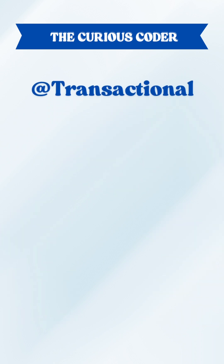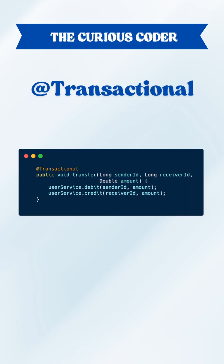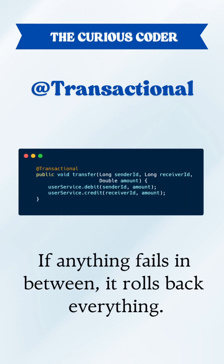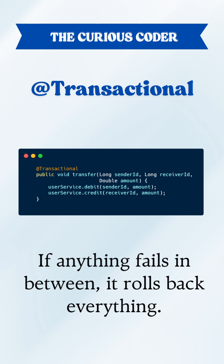That's where @Transactional comes in. It wraps both operations into one transaction. If anything fails in between, it rolls back everything — even the debit. No partial updates, no money lost.